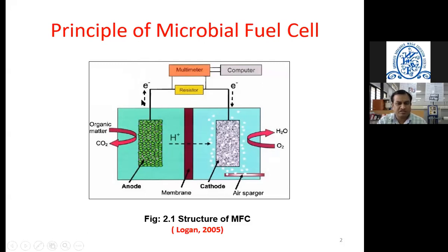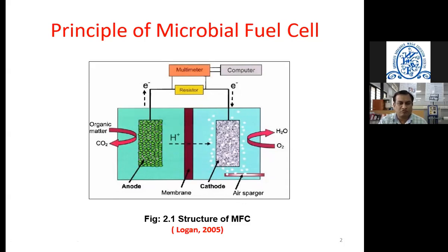From this diagram, you can understand there are different components of this MFC. One component is the anode, the second is the cathode, and the third — optional but shown here — is the proton exchange membrane. There is an anode chamber and a cathode chamber. In the anode chamber, we put the wastewater or sewage water that we want to treat.